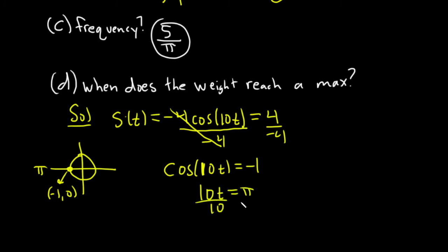And so the cosine of pi is negative 1. So that means that 10t has to be equal to pi. And you can just solve for t. So t would be equal to pi over 10. And the units here are seconds.